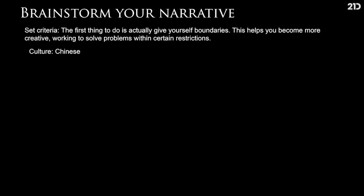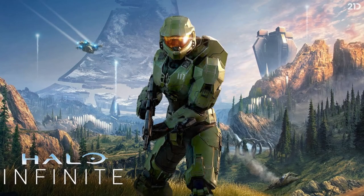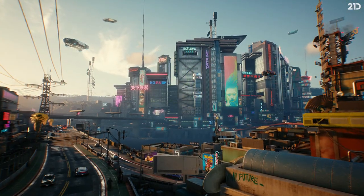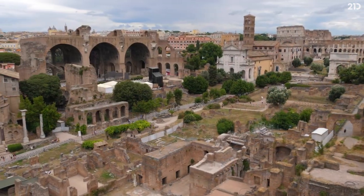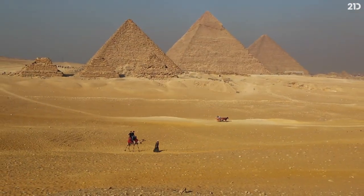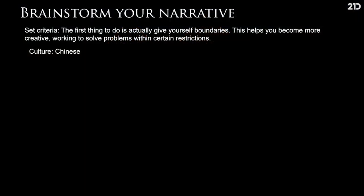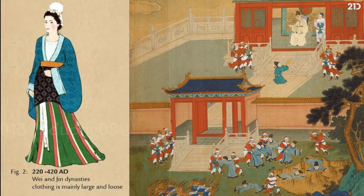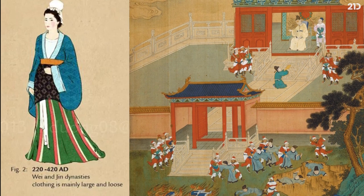The second boundary I like to pick is a time period. And again, this can be anything — it can be far into the future like Halo, in the near future like Cyberpunk, or way in the past like Ancient Rome or Egypt. It can also be a made-up time period, but even then you'll draw from real-life sources. I'm going to pick Circa Qin Dynasty. The Qin Dynasty was the first dynasty of a unified China, and I really like the aesthetics of that time period — the way the artifacts looked and the way the clothing looked.